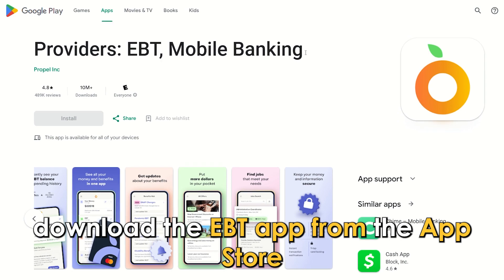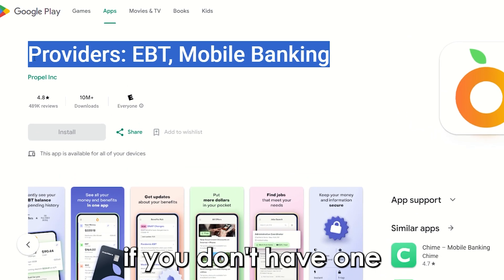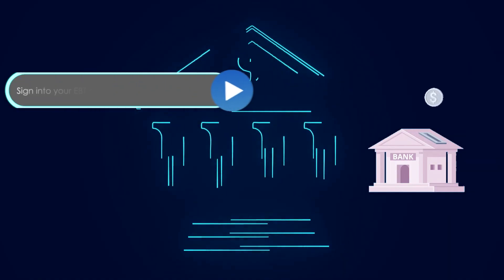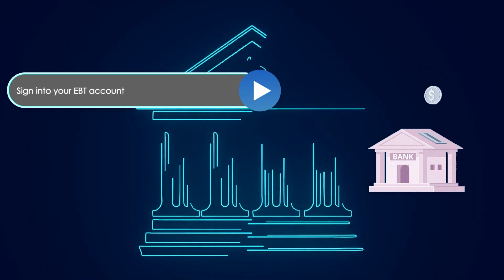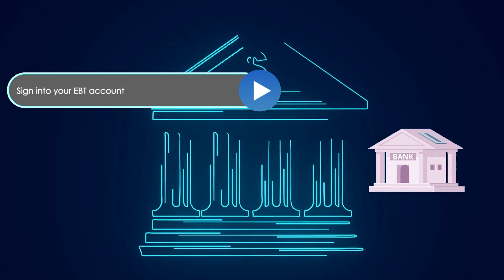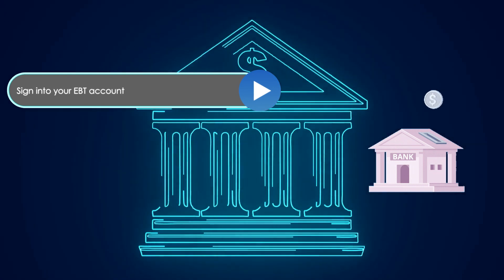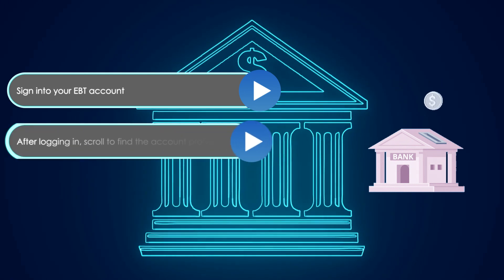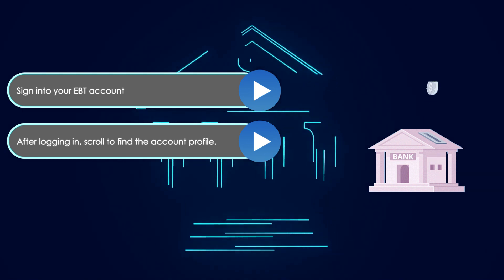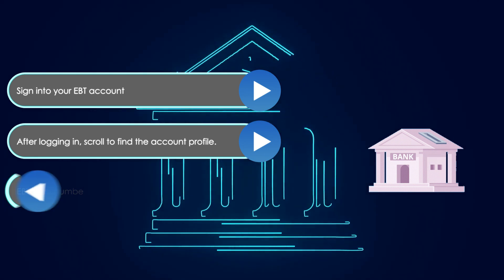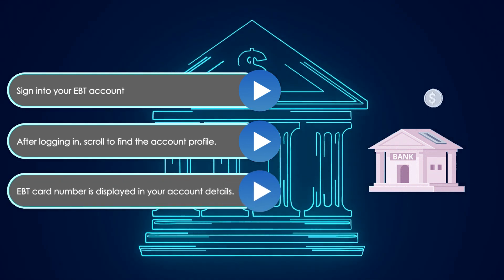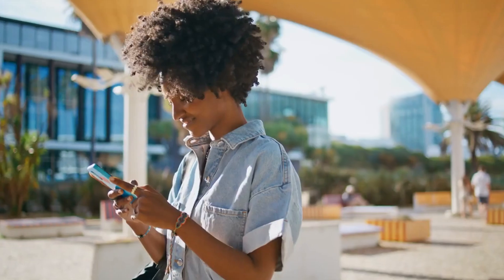Finding the EBT card number on your mobile app: download the EBT app from the App Store if you don't have one. If you already have an account, sign in using your username and password. If not, create an account on the app. After logging in, scroll to find the account profile. The EBT card number is usually displayed within your account details.